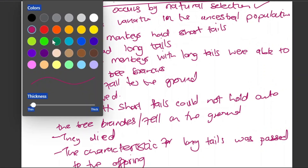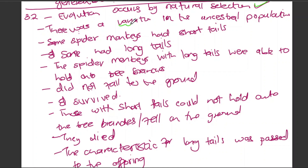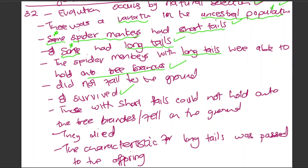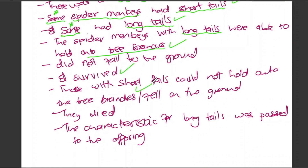Evolution occurs by natural selection. There was a variation in the ancestral population. Some spider monkeys had short tails and some had long tails. The spider monkeys with long tails were able to hold on to the tree branches, did not fall to the ground, and survived. Those with short tails could not hold on to the tree branches, fell to the ground, and died. The favorable characteristic — long tails — was passed on to the offspring. Eight marks.